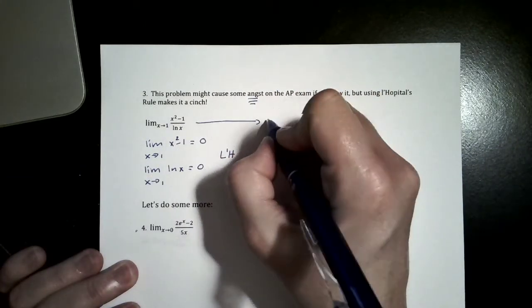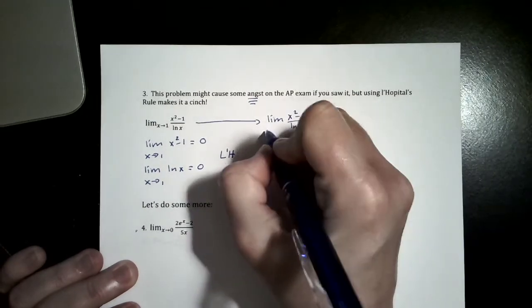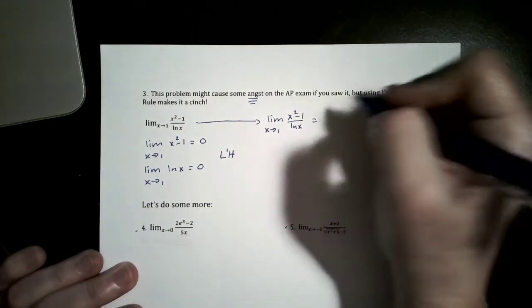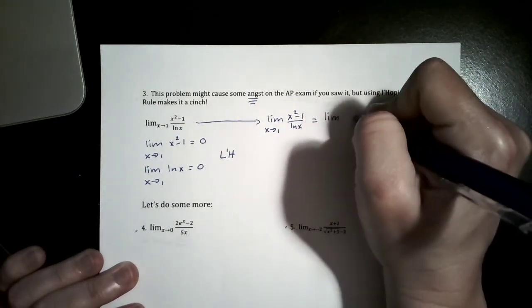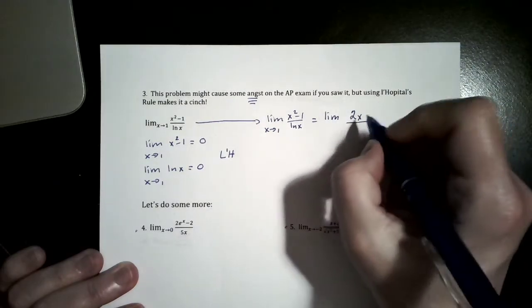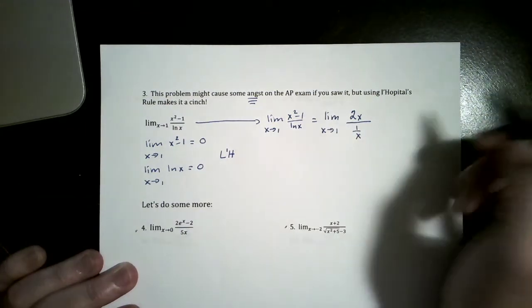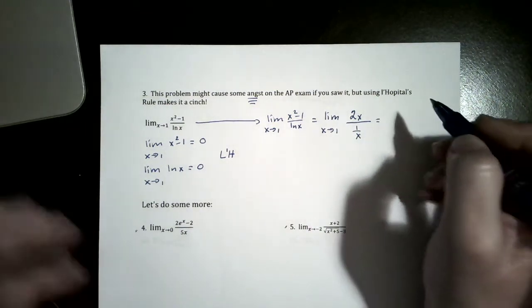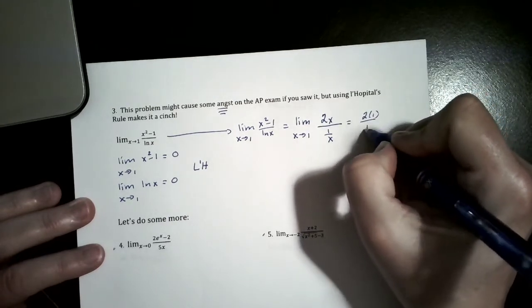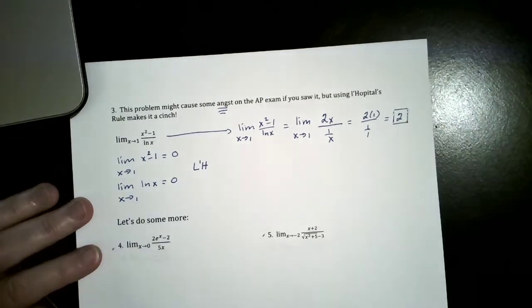So this limit — x squared minus 1 over the natural log of x as x approaches 1 — can be rewritten using L'Hôpital as the limit of the derivative of the top, which is 2x, over the derivative of the bottom, which is 1 over x, as x approaches 1. Now I can do direct substitution: 2 times 1 over 1 divided by 1, which is just equal to 2. So the answer to that problem is 2.